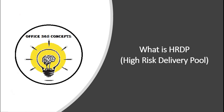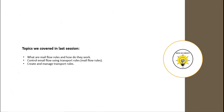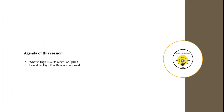Hi guys, and welcome to the next video of this entire series. In this video I will be discussing what is High Risk Delivery Pool, or HRDP. In the last session we discussed what are mail flow rules and how we can control email routing using mail flow rules in Exchange Online.